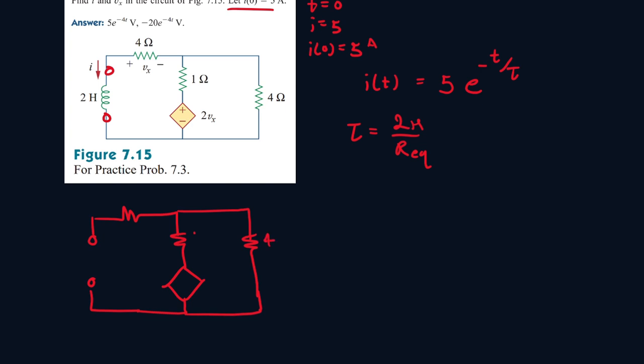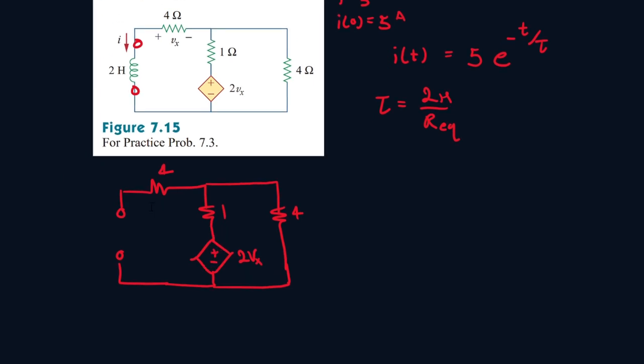So this is 4 ohms, 1 ohm, 4 ohms, and then 2vx. And then this is plus v, and this is vx here. And we have to find the resistance equivalent between these two terminals.